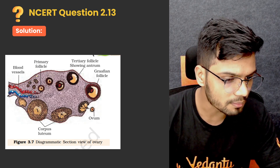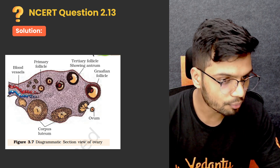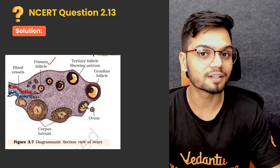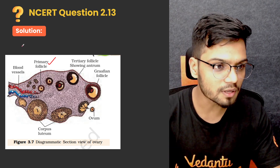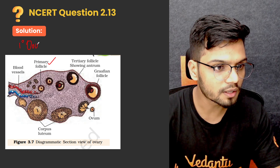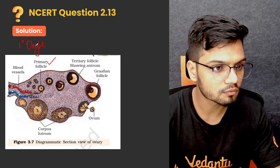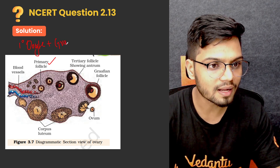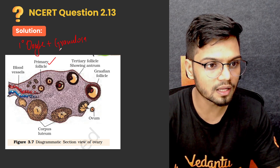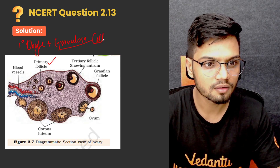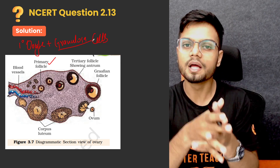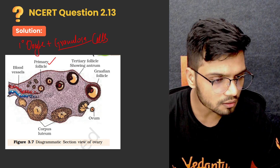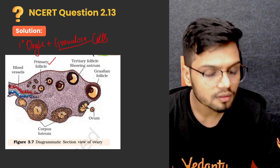We have the primary follicle. Now what is the primary follicle? The primary follicle is nothing but a primary oocyte plus a single layer of granulosa cells. So primary oocyte plus a layer of granulosa cells is your primary follicle.